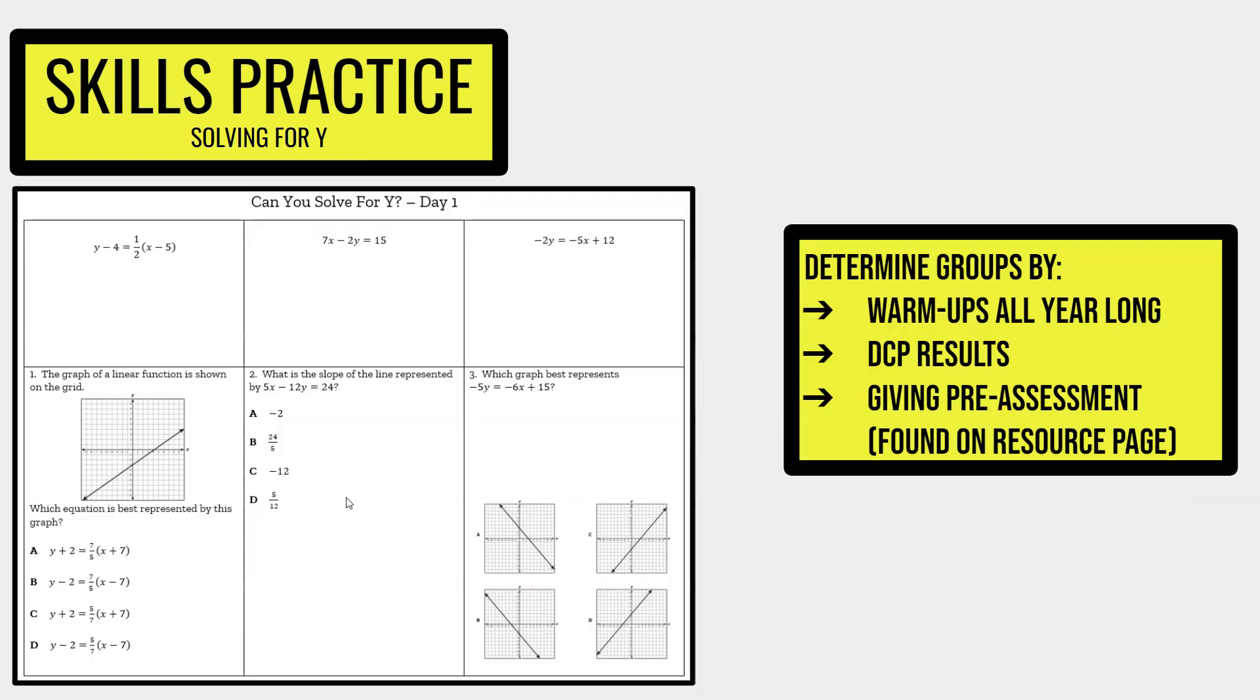We also have a solving for y set of practice worksheets, which is for students who are able to solve for y. Students who can solve for y open themselves up to around 20 to 25 questions that can be correctly answered because of Desmos and using technology. I would recommend that you determine your group who can solve for y either by determining their warmups all year long and their success rate at solving for y, their DCP results, or giving a pre-assessment that you can find on the resource page.